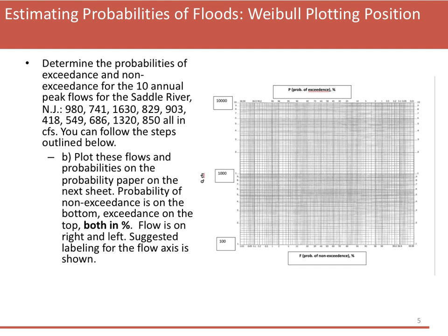To show you how this works, I'll plot the first point together with you. I'm going to find Q = 1630 on the flow axis — this is like a log plot, so this line here is approximately 1630. Now I need to find the probability of exceedance of 0.09 on the top axis. This vertical red line is approximately at that 9% spot. I come in here and plot that first point.